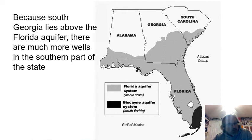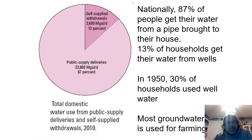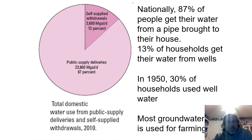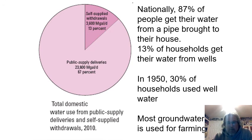South Georgia and Florida have softer ground — more sandy and clay-based, not granite — and it still rains a lot, so people down there use wells much more often. Nationally, 87% of people in our country now get their water from a pipe from a water company; only about 13% of households get their drinking water from wells. Back in 1950 it was about 30% of people still using wells, but as the country has grown and technology has gotten better and cheaper, more people get their water from water companies. Most of the groundwater taken out of the ground today is used for farming, not for people's houses.